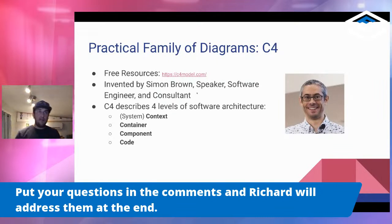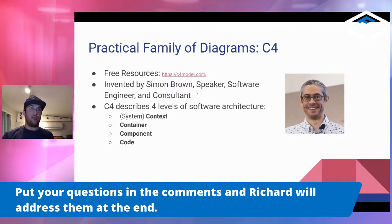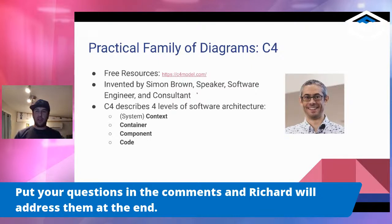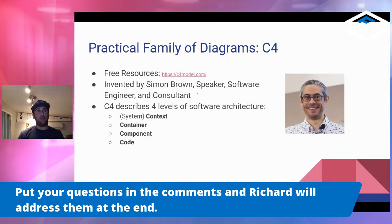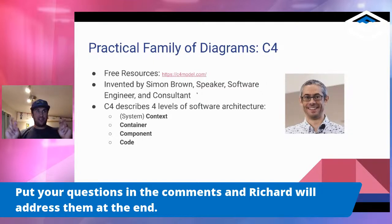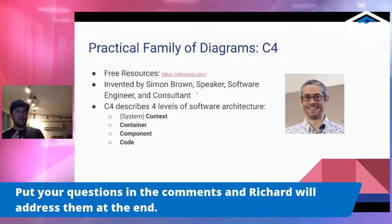Instead of describing individual diagrams, I'm going to start with a methodology — a family or collection of diagrams that will help you know what kinds of diagrams to use and how to organize them. The particular system I want to describe is called C4. C4 was invented by Simon Brown, a really talented speaker, software engineer, and consultant. He's been evangelizing it for a couple of years. The C4 system is very simple — it considers four levels of architecture: context, container, component, and code.